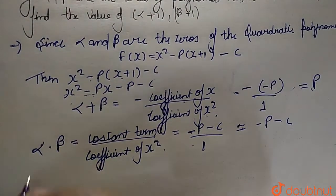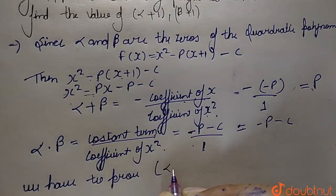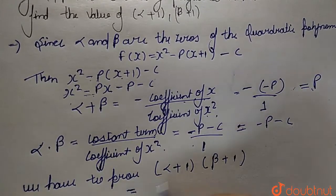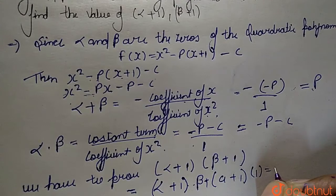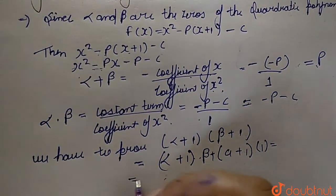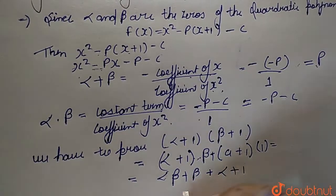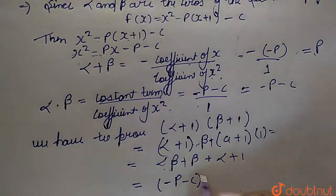Now we have to find the value of (alpha + 1)(beta + 1). When we multiply this out, we get alpha·beta plus alpha plus beta plus 1. Substituting, that is minus p minus c plus the value of alpha plus beta, which is p.